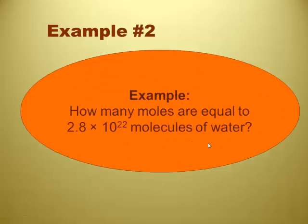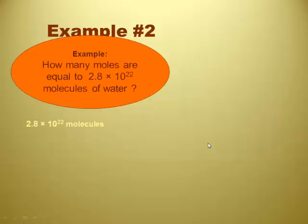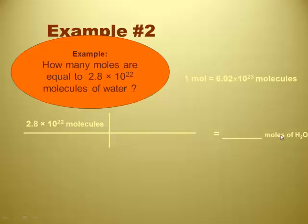How many moles are equal to 2.8 times 10 to the 22nd molecules of water? Now we're going backwards. Now if you feel good, if you feel up to this, pause and try it out yourself. We're moving forward here. Now the setup. Always start with the number in the problem, which in this particular case is the 2.8 times 10 to the 22nd molecules. Which you wrote down, Mr. Cain, very well, numerical value and unit. Over on the right here, we write moles of water. So we need a ratio, and we need to write the ratio appropriately so that molecules cancel.